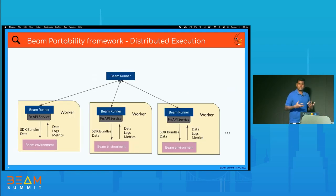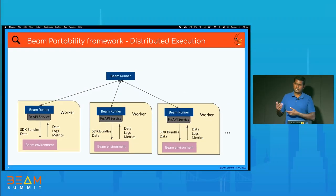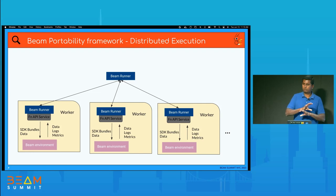Beam runners are distributed systems using a bunch of machines. There's a common runner component orchestrating the whole execution that sends parts of work to workers. Within each worker, a component of the runner runs, and it starts up Beam environments. When work comes to a worker, it figures out the bundles needed and uses the SDK environment to execute them. From the runner to the environment, you send things like bundle definitions and data; back from the environment, you receive results, logs, and metrics.